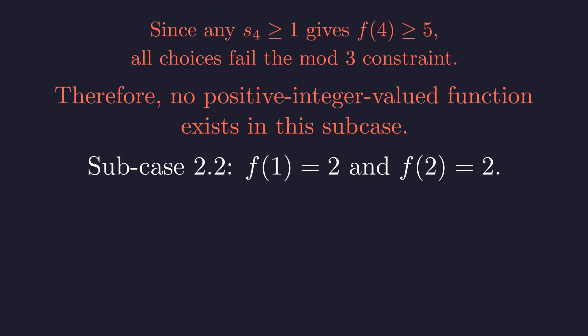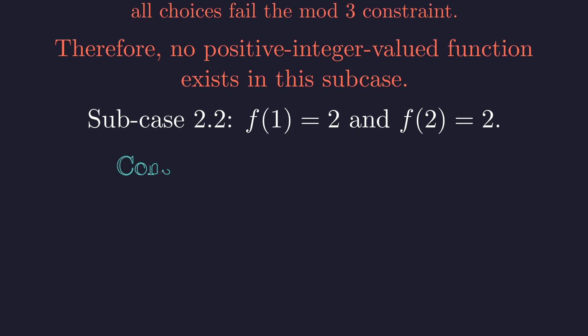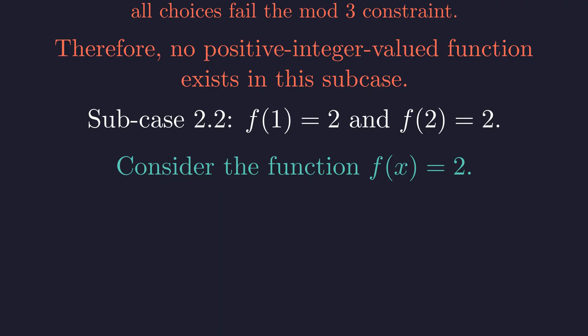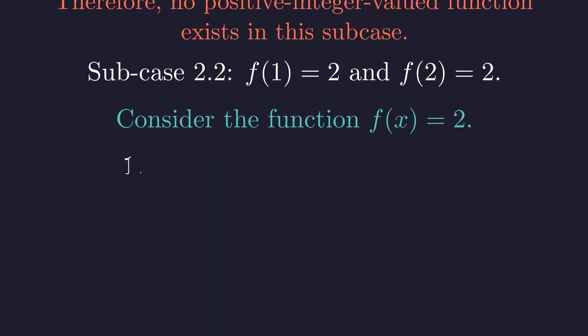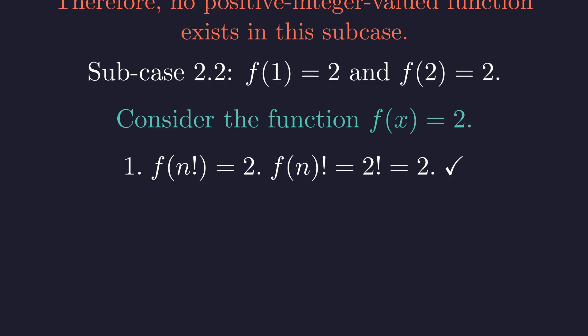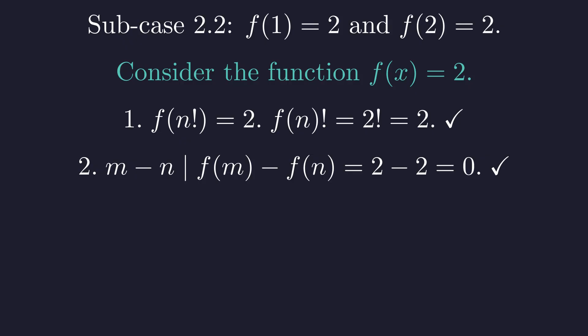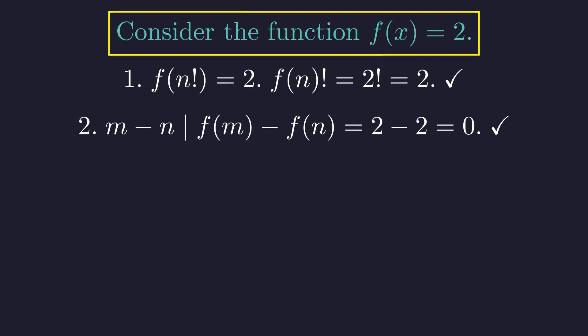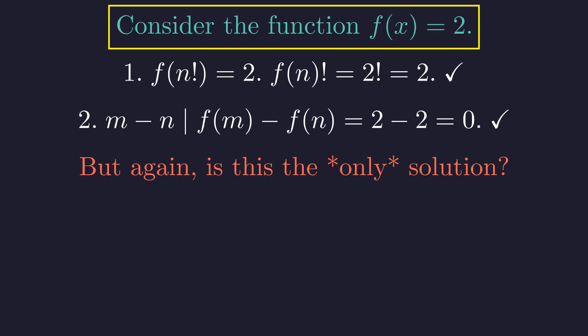This leaves only one possibility: f(1) = 2 and f(2) = 2. The obvious candidate is the constant function f(x) = 2. Checking the factorial condition, both sides are 2. Checking the divisibility condition, m minus n divides 0. Both conditions are satisfied, so f(x) = 2 is our third solution. Once again, we must ask — could there be another solution where the function equals 2 for some values and something else for others? Let's prove this is impossible.